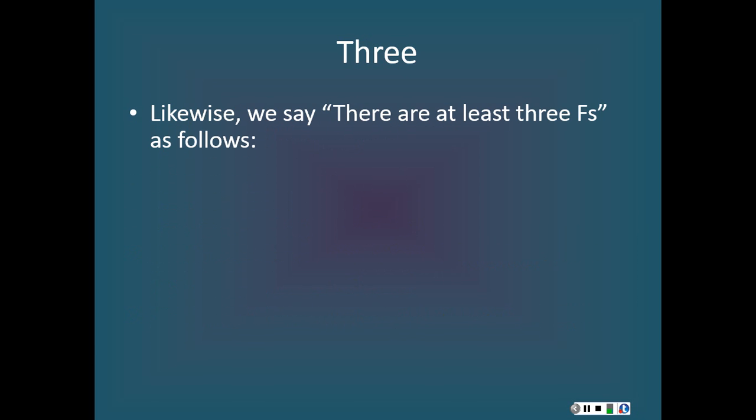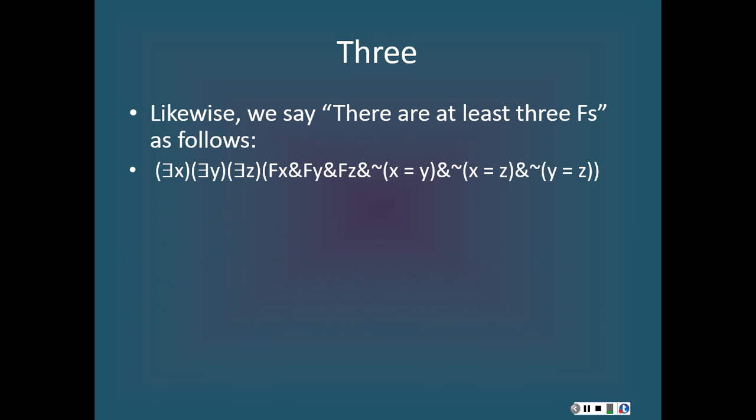Let's look at the claim that there are at least three F's. We can represent that claim as follows: there exists an x and there exists a y and there exists a z such that x is F and y is F and z is F, and it's not the case that x equals y, and it's not the case that x equals z, and it's not the case that y equals z. Convince yourself that this is in fact equivalent to the claim that there are at least three F's.